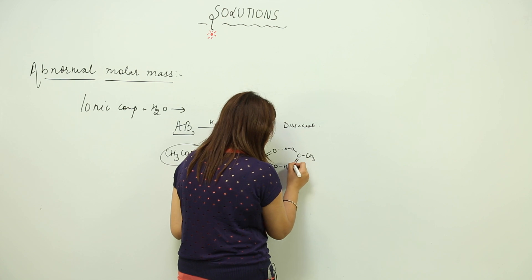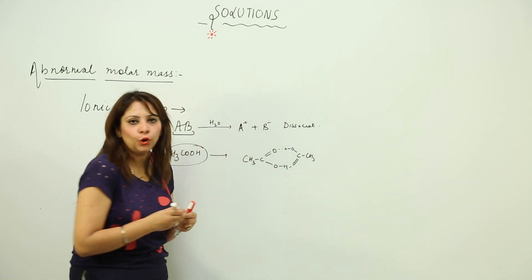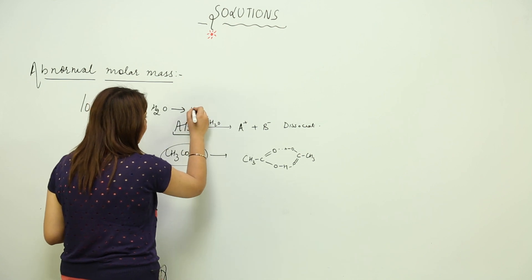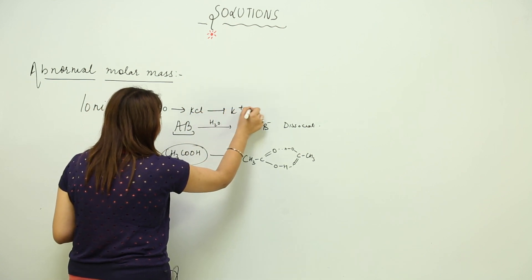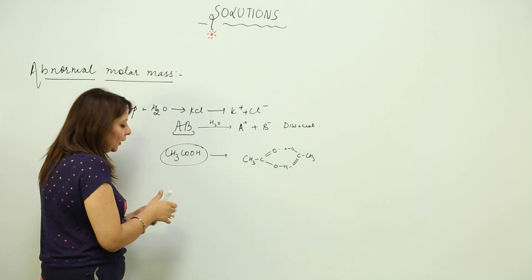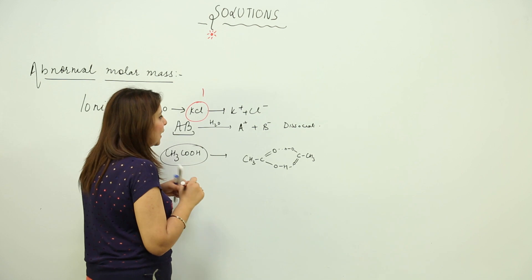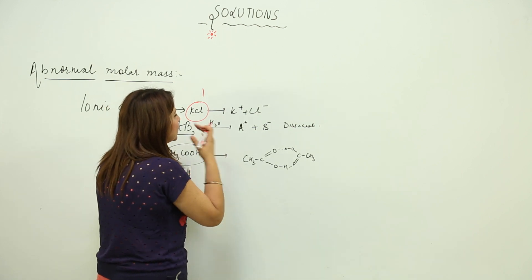It forms a kind of hydrogen bond. So here, let's take an example in terms of KCl. This is my ionic compound. So what happens is if earlier KCl was one particle, but after dissolving in water, it becomes two particles now.